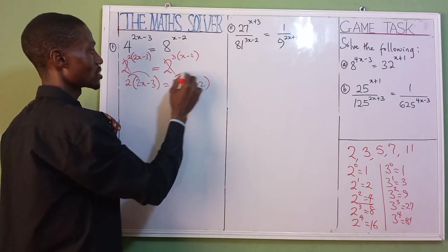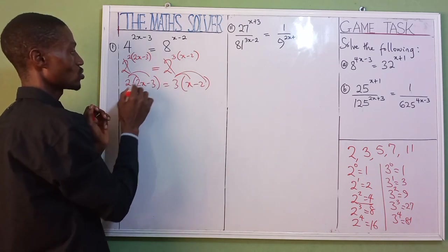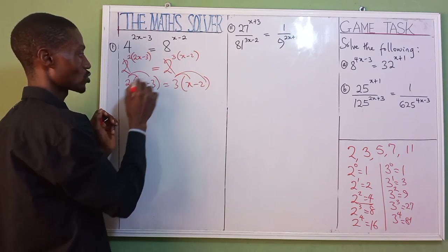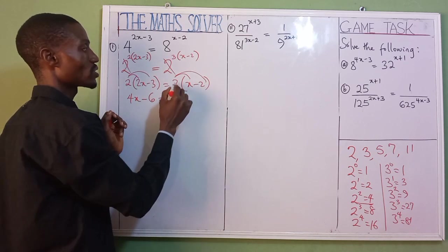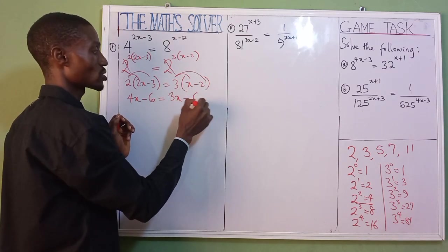Use this to multiply under the second one. 2 times 2, that is 4x, minus 2 times 3, that is 6, equals 3 times x, which is 3x, minus 3 times 2, that is 6.